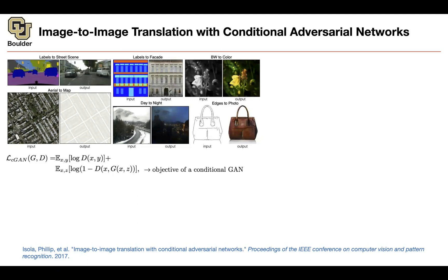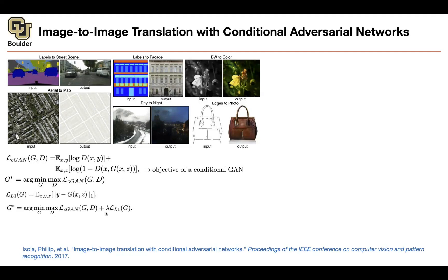Y is the output — this is the ground truth, the real data. And G of X and Z, where Z is your latent variable. Given X, you are generating images. You are training G, a function that takes you from X to Y, and then discriminating between real and fake. At the same time, because you know your ground truth, you can put a reconstruction loss — you want the output of the generator to be close to the real data. So now you have two losses: one from the L1 loss and the other from the discriminator, added with a hyperparameter tuned on your validation data.